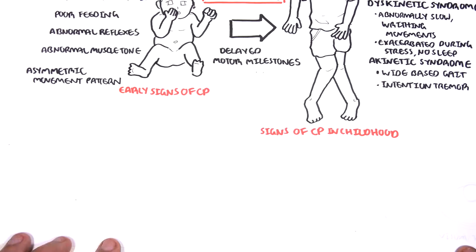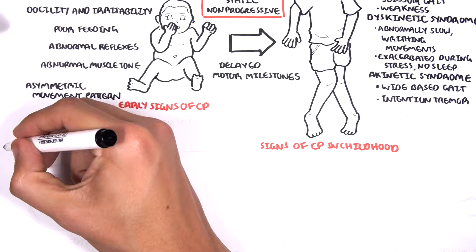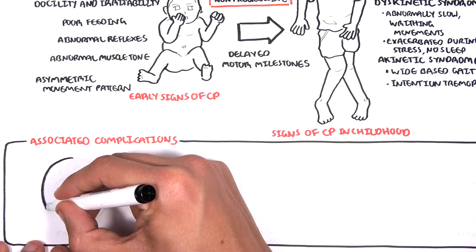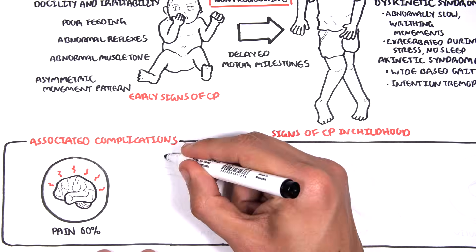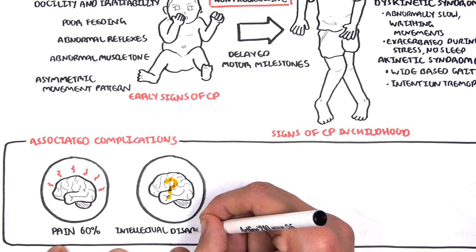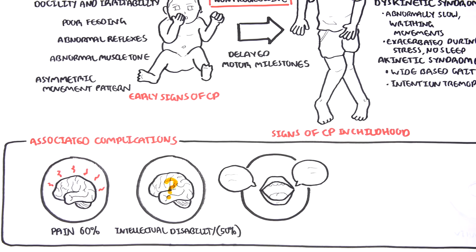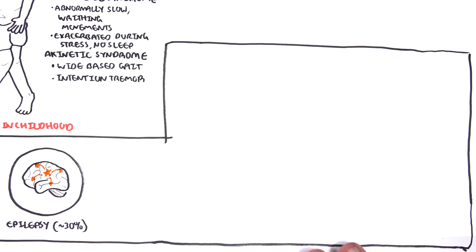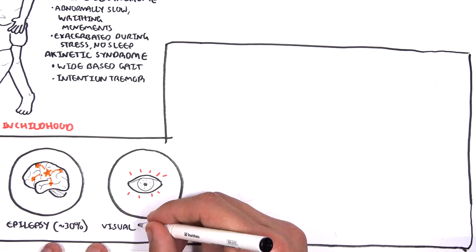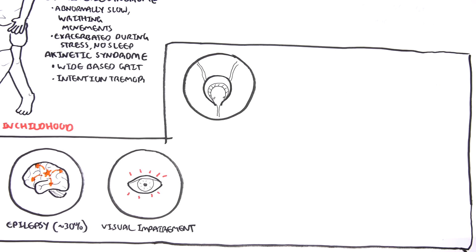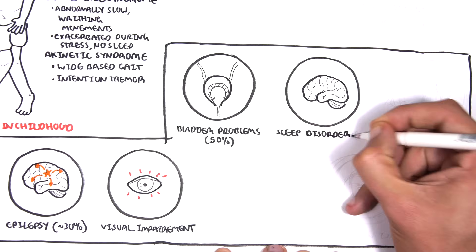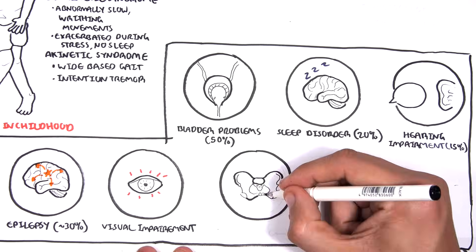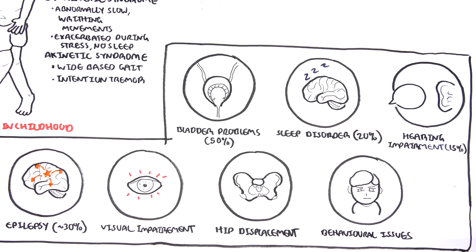Cerebral palsy is not only about movement and motor problems — there are many other complications associated with it. These include pain, intellectual disability, speech and language disorders, epilepsy and seizures, visual impairment, bladder problems, sleep disorders, hearing impairment, hip displacement, and behavioural problems.